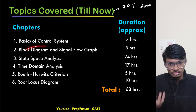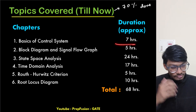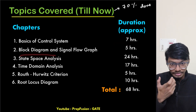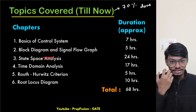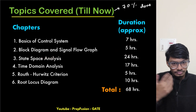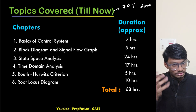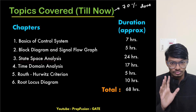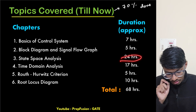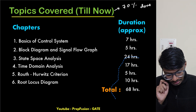We start with basics of control systems, as mentioned in the syllabus — approximately seven hours. Then block diagrams and signal flow graphs, which are shorter topics. Next is state space analysis, which has around 24 hours of content.